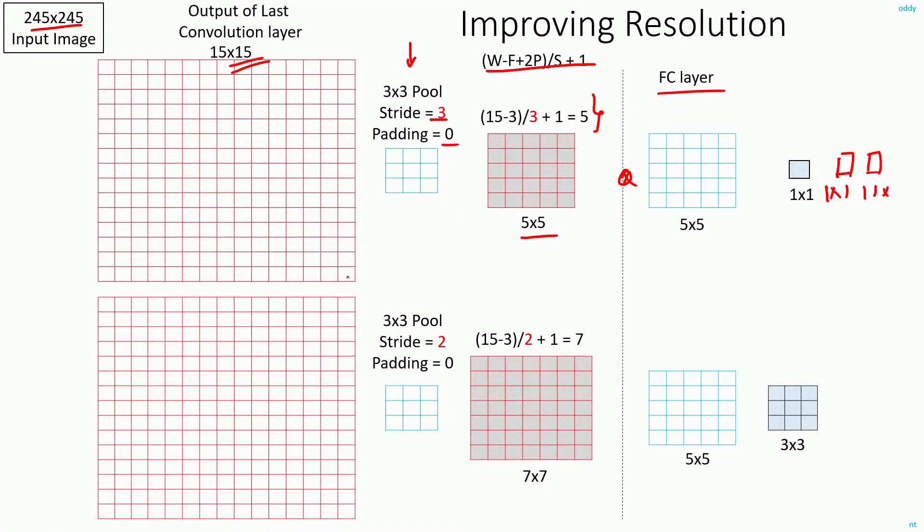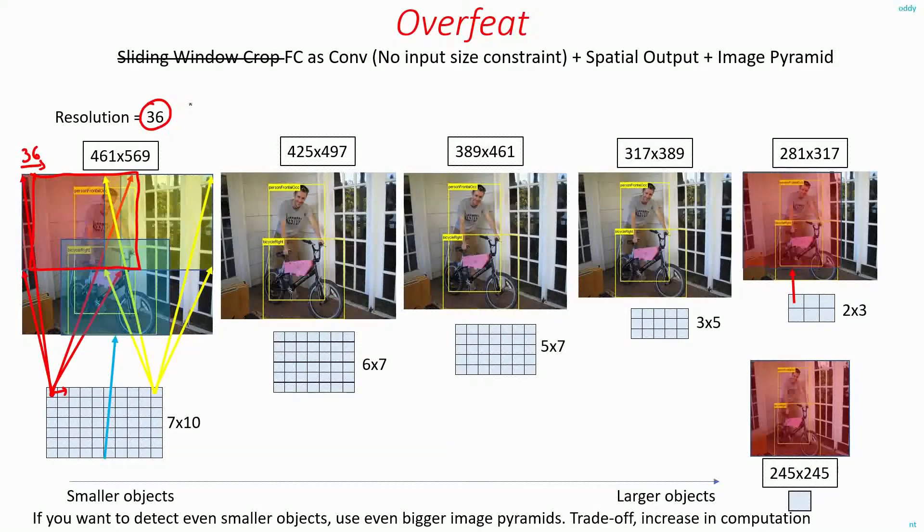Now with this setup, how do you increase the resolution of the network? Instead of using the stride of 3, you can go for a stride of 2. If you apply this formula, you will get 7x7 feature map output. If you convolve with the 5x5 filter in the fully connected layer, you will get a 3x3 output. So even at the very end, your output will be of size 3x3 spatial output. This is one way of improving the resolution. Since from 1x1 output you are going to 3x3, you will be able to increase the resolution from 36 to 12, by dividing 36 by 3.